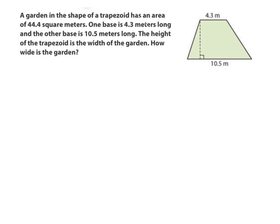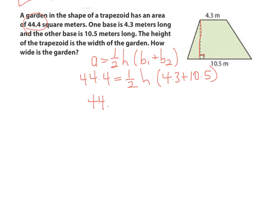So first thing we want to do is write what we know about the area of a trapezoid. So that's area equals 1/2 times the height times base 1 plus base 2. So we were told the area is 44.4. 44.4 equals 1/2. We're looking for the height. That's the height right there. So that stays. But I know one base is 4.3. And I know the other base is 10.5. So according to PEMDAS, I do what's inside the parentheses first. So I have 44.4 equals 1/2 times the height times 4.3 plus 10.5 is 14.8.